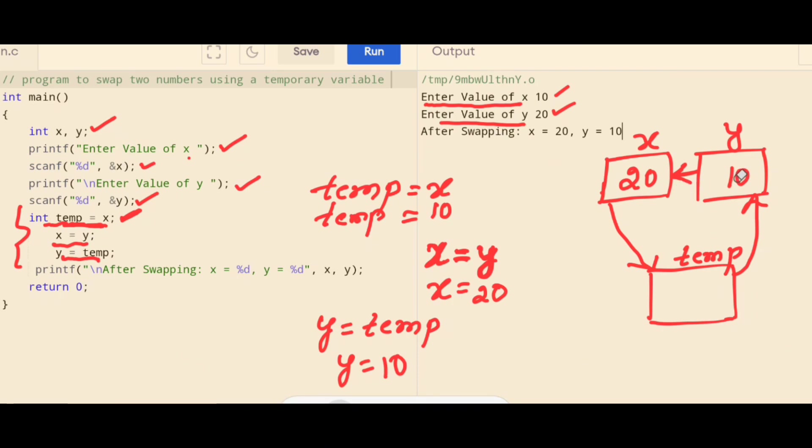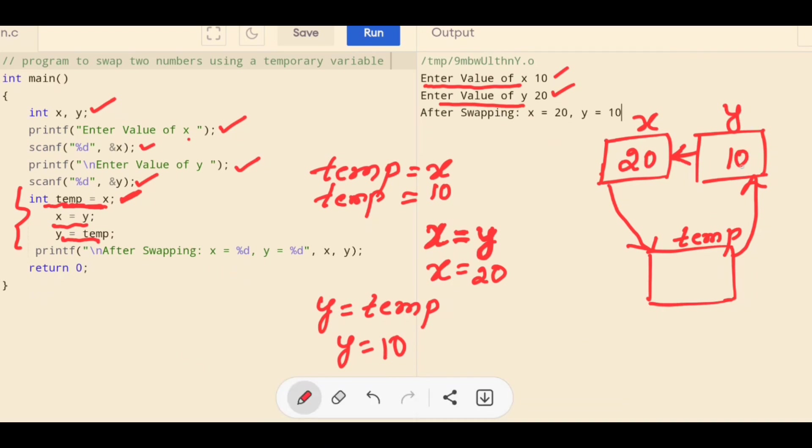So, finally, what is that you got? x is having 20 and y is having 10. But initially what is that you had? You had x as 10 and y as 20. But by making use of a temporary variable, that means just you are taking the help of the third variable so that you can exchange the values that are stored in these two numbers, x and y.